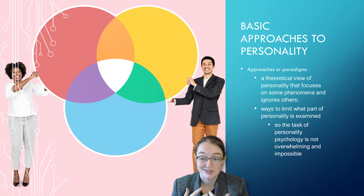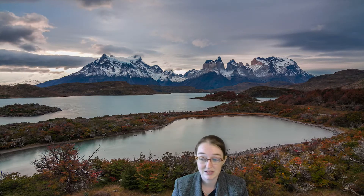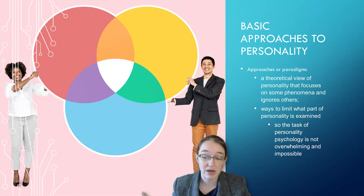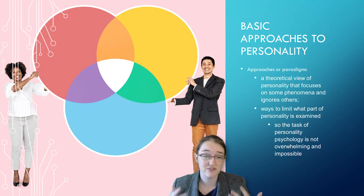Even when trying to understand the same research topic, these approaches approach it differently. For example, a trait psychologist might try to understand whether depression's relationship with neuroticism is stable over time, or if there are specific facets of neuroticism more strongly linked than others — versus a behavior geneticist who's more interested in understanding if depression and neuroticism share common genetic sources. Different kinds of studies answer those questions, but both address how neuroticism and depression are related.